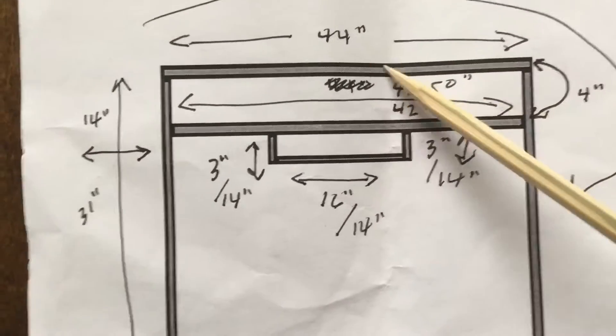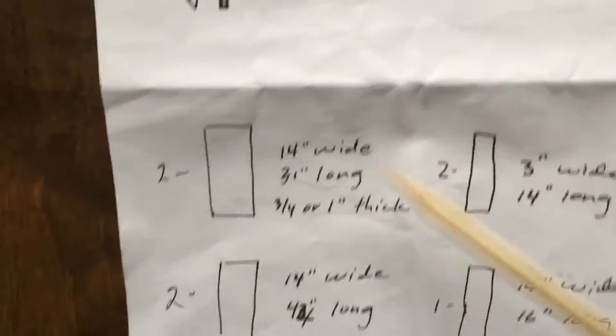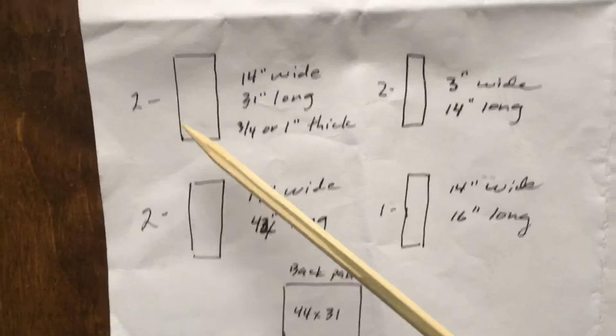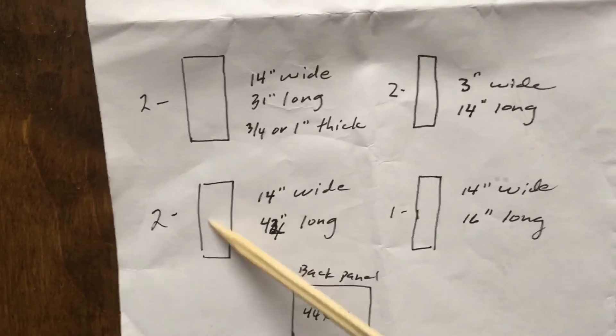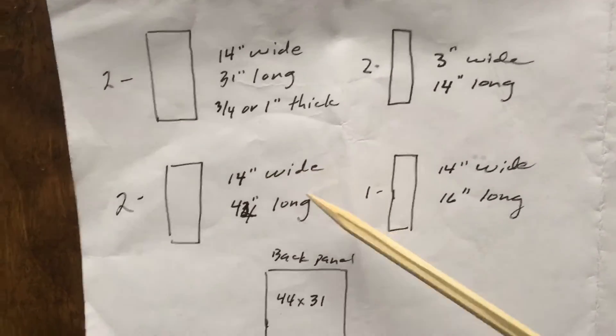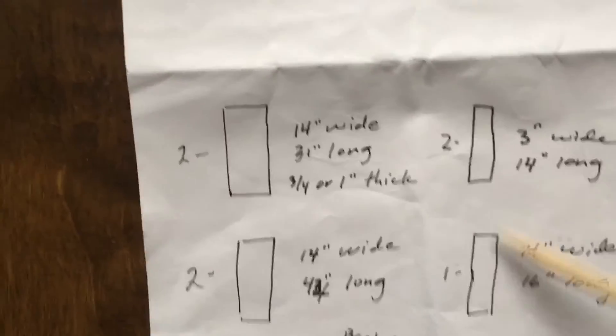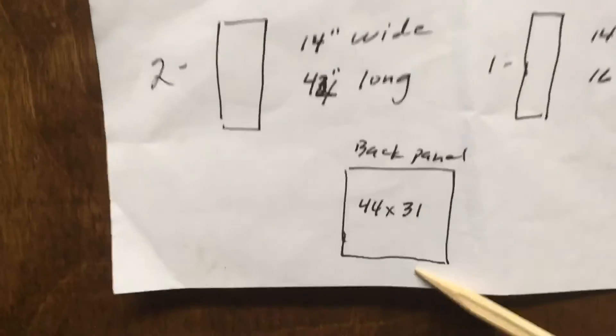Got my side panels here. This is my top piece—the depth is going to be 14 inches. Here are my side pieces, which are here and here, and then my piece right there. This right here is going to be my back panel.